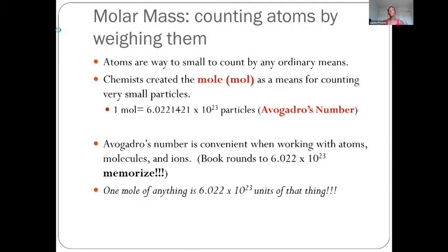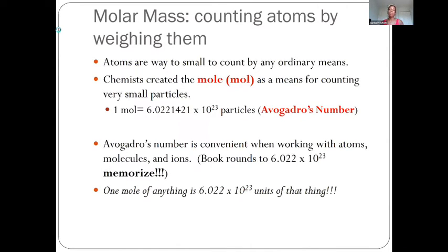Atoms are extremely small and trying to count them by any ordinary means would be almost impossible. Scientists and chemists had to come up with a system to aid in this counting process, where they assign an arbitrary name or concept to represent a certain value or number that we're counting. This is nothing new — we do this all the time. For instance, when I tell you that you have a dozen of something, the word dozen means 12.